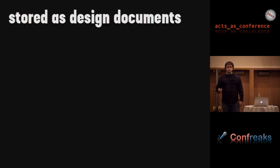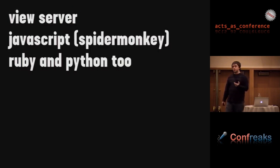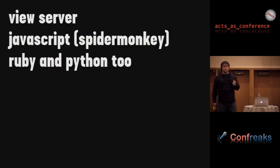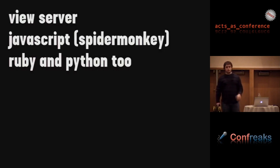Views are stored just as documents like anything else, so when you replicate they're all there. The views use a view server — by default when you install CouchDB you get a JavaScript one running in SpiderMonkey. There is a way to swap that out, and you could use Ruby if you really don't like JavaScript, or there are Python ones too. The JavaScript is powerful enough, and from all the Ajax work everyone's already familiar with it.